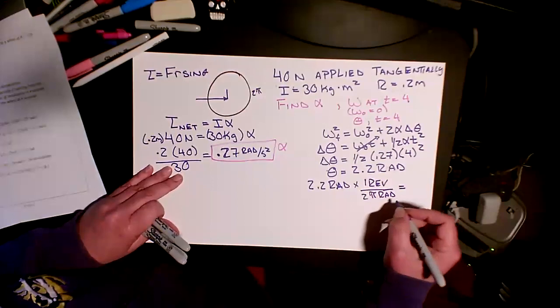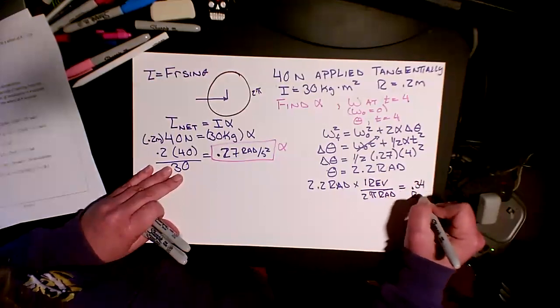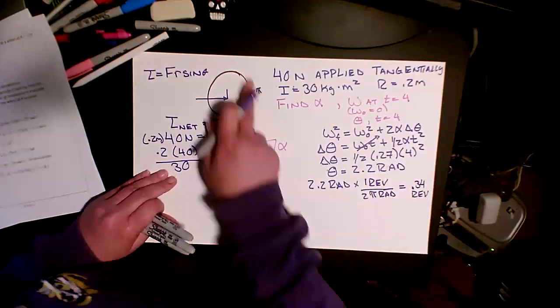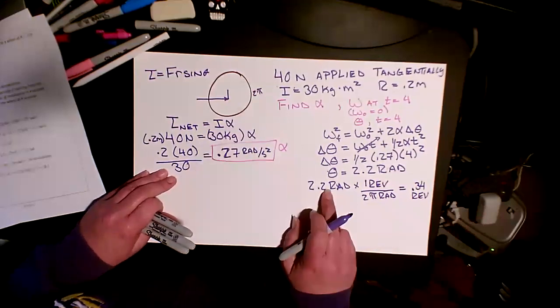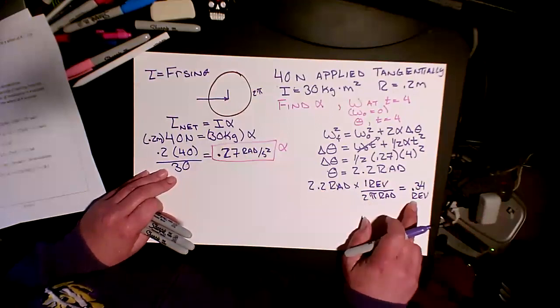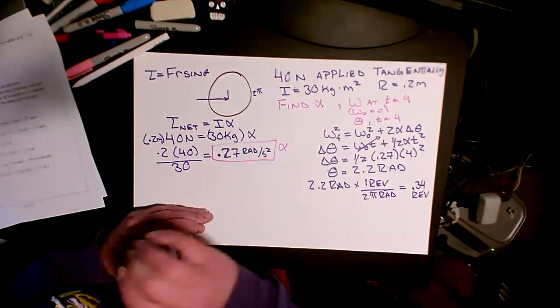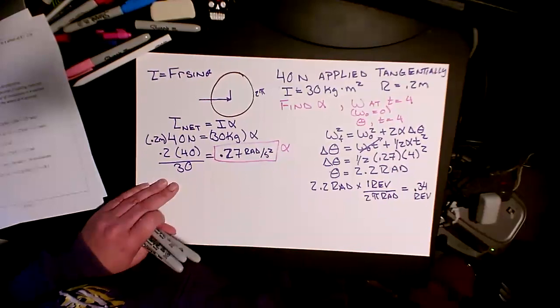So that gives me 0.34 revolutions or rotations. So let's think about this again. One trip around is 2 pi radians. I have the amount of radians, so this is how far around did it actually go. So it only went 0.34 revolutions, it didn't even make one entire turn. And there you have it. So now we've done everything with torque and rotation and our next thing is momentum.